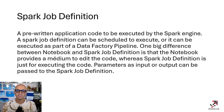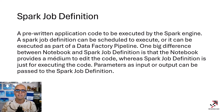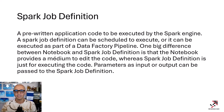Spark job definition is a way to run a piece of executable code written in any of the languages supported by Spark. It can be a program that you have written, to which you pass parameters or get output parameters, and then execute on its own — schedule it or put it as part of a pipeline. The difference between a Spark job definition and a notebook is that a notebook gives you an editor experience, while Spark job definition is only for executing.